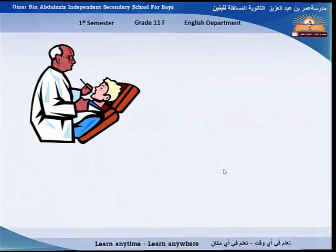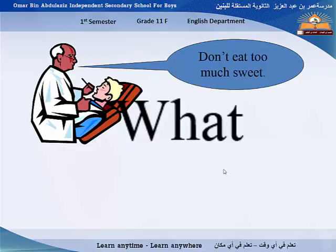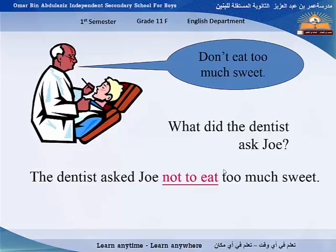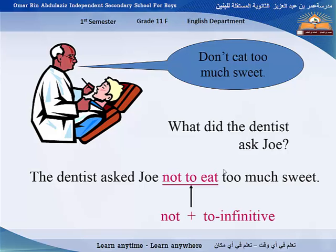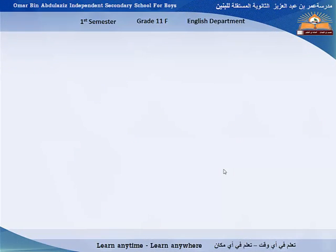Here are some more examples. 'Do not eat too much sweets.' What did the doctor say to the patient? The doctor asked Joe not to eat too much sweets — not to eat. Notice the structure: 'not' plus 'to' plus infinitive for the negative.